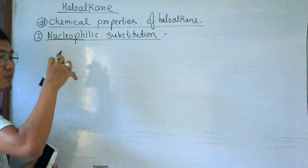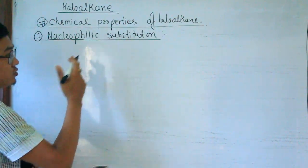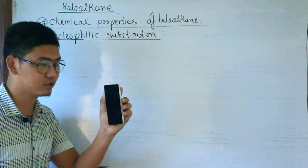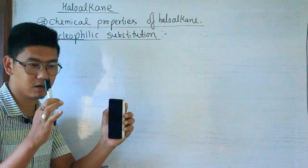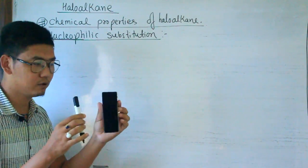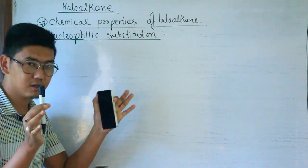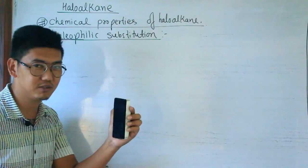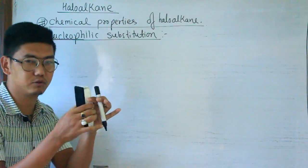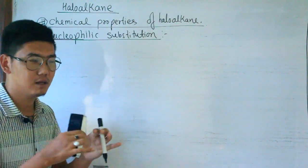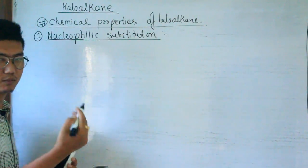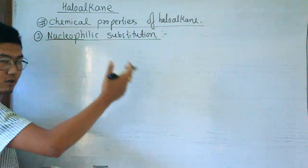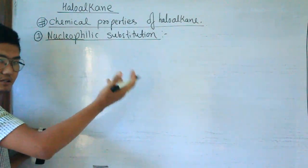In nucleophilic substitution, negatively charged species undergo substitution. Substitution means exchange — like substituting a duster for a marker. If you have a negative charge, you can substitute. Electrophiles are positively charged; nucleophiles are negatively charged. Nucleophile substitution means a negative species does the exchanging.